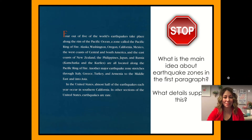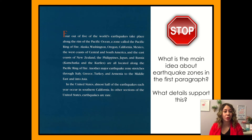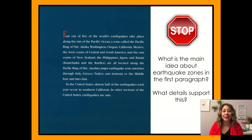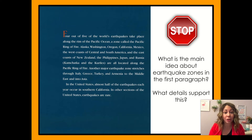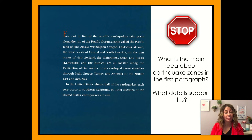Let's get back to our reading. This is an informational text, so it's going to give us lots of information about earthquakes. 'Four out of five of the world's earthquakes take place along the rim of the Pacific Ocean, a zone called the Pacific Ring of Fire. Alaska, Washington, Oregon, California, Mexico, the west coast of Central and South America, the east coast of New Zealand, the Philippines, Japan, Russia's Kamchatka, and the Coral Islands are all located along the Pacific Ring of Fire. Another major earthquake zone stretches through Italy, Greece, Turkey, and Armenia to the Middle East and into Asia. In the United States, almost half of the earthquakes each year occur in Southern California. In other sections of the United States, earthquakes are rare.'